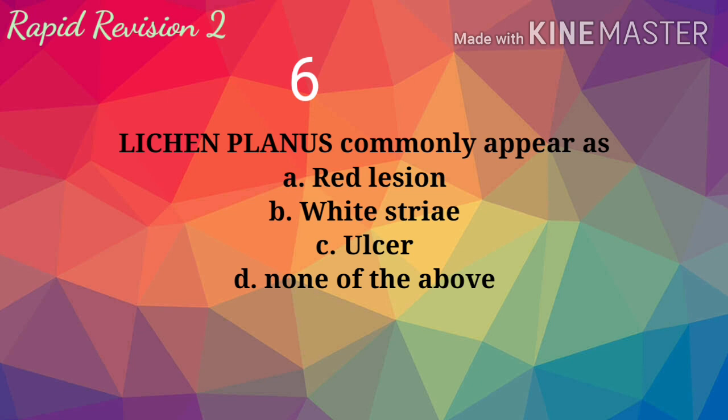Lichen planus commonly appears as: A. Red lesion. B. White striae. C. Ulcer. D. None of the above. Answer is B: white striae.